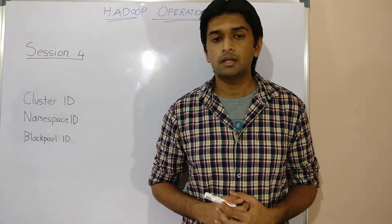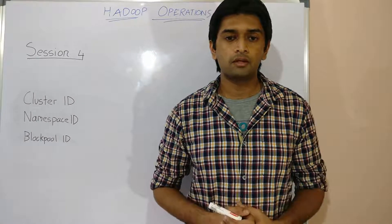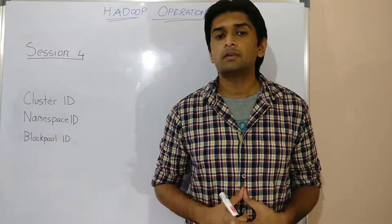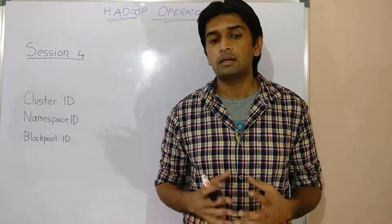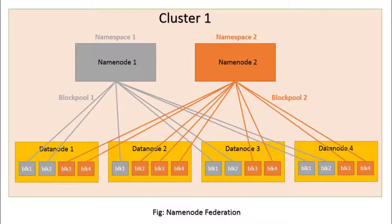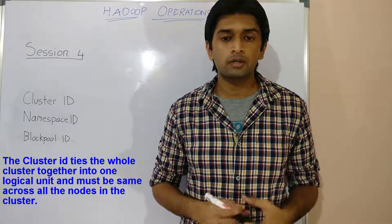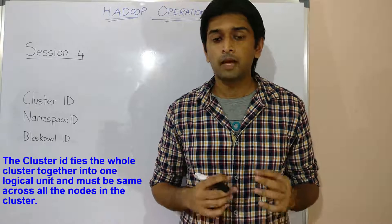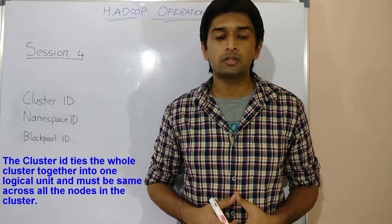The namespace ID and block pool ID are particularly important in a federated deployment. Within a federated deployment, there are multiple name nodes that work independently. Each name node serves a unique portion of the namespace identified by the namespace ID and manages a unique set of blocks identified by the block pool ID. The cluster ID ties the whole cluster together into one logical unit and must be the same across all nodes in the cluster.